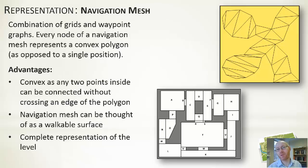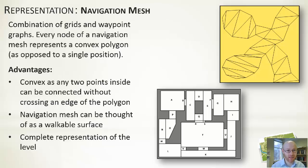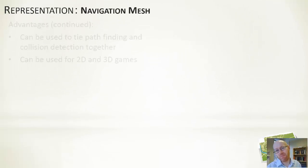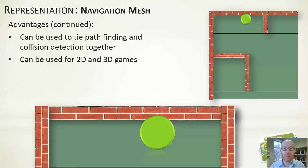The advantage of using convex shapes is that if you're at any point on a convex shape and want to move to any other point on it, it's a straight-line motion. That's not the case for concave shapes, where you may have to leave and re-enter the shape. A navigation mesh can be thought of as a walkable surface, lending itself to both 2D and 3D games and giving a complete representation. It can also be used for collision detection, constraining characters to the walkable surface.